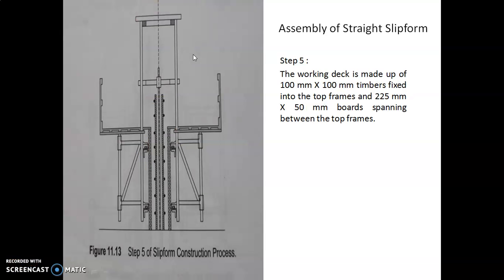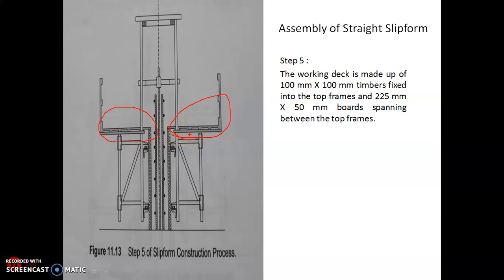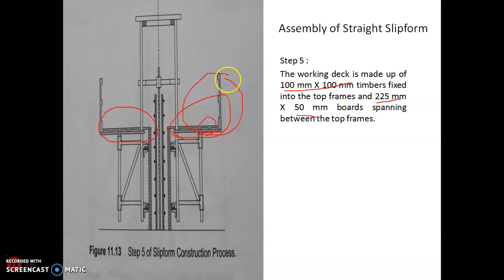In the fifth step, once the pre-assembled yoke assembly is fixed, you go for installing the working deck. The working deck is made up of 100 by 100 mm timbers fixed into the top frames, and 225 by 50 mm boards spanning between the top frames. The sizes must be determined through design calculations.